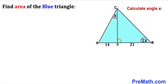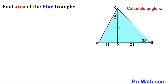Welcome to pre-math. In this video we have triangle ABC, where angle DBC is 2x, angle ACD is x, and angle BDC is 90 degrees. Side length AD is 14 units and side length BD is 21 units. We are going to calculate the area of the blue shaded triangle ABC and also calculate angle x.